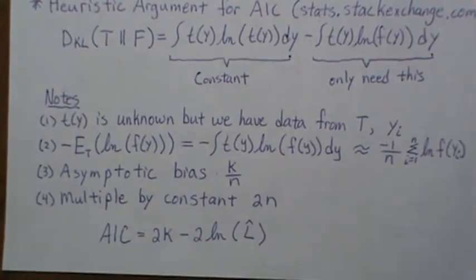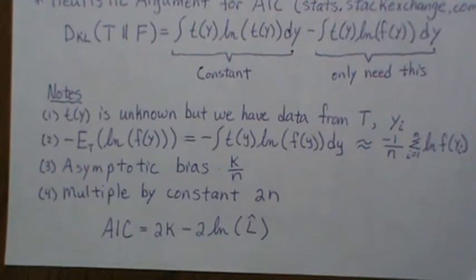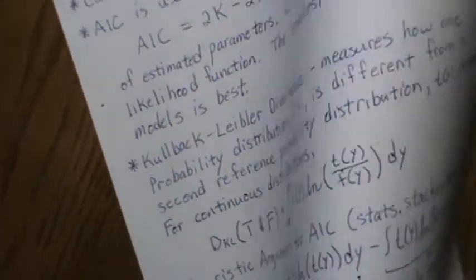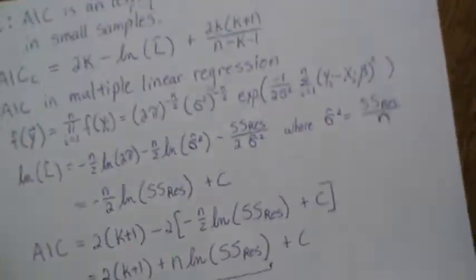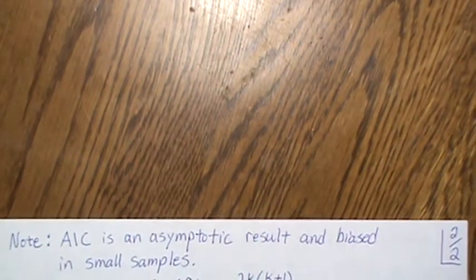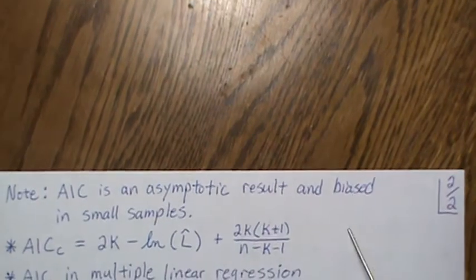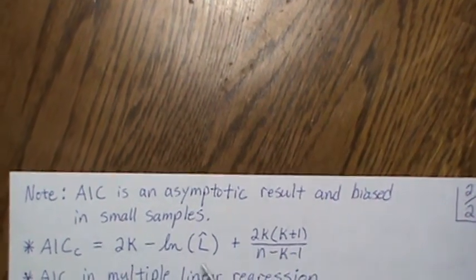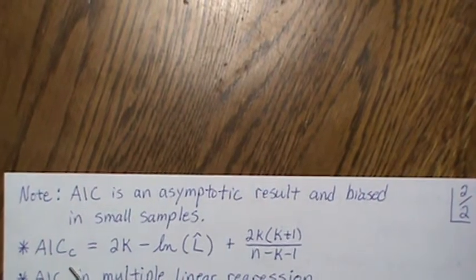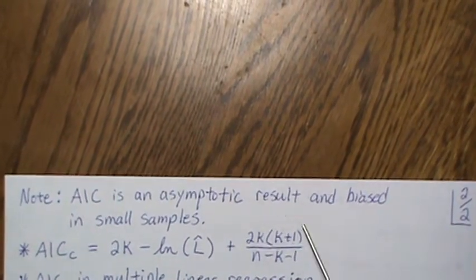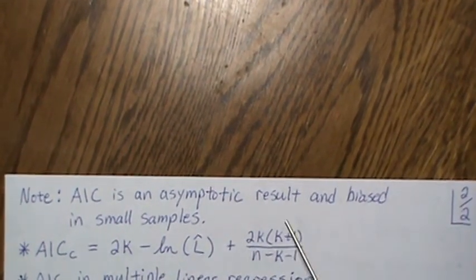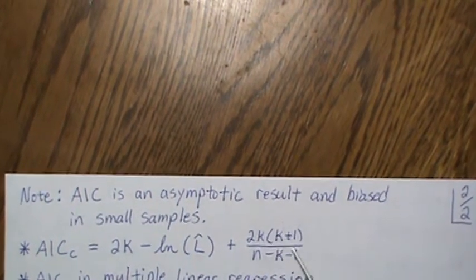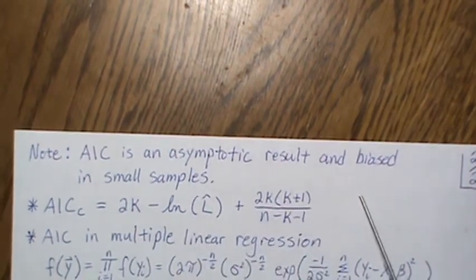Since it's an asymptotic result, it can become quite biased in small samples, and they've noticed that. They corrected the AIC for small samples with an added bias correction, so you'll often see AIC corrected values: AICc = 3K - ln(L-hat) + [aK(K+1)]/[n-K-1].